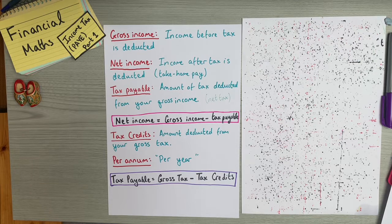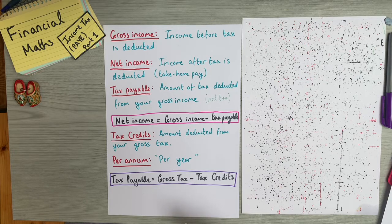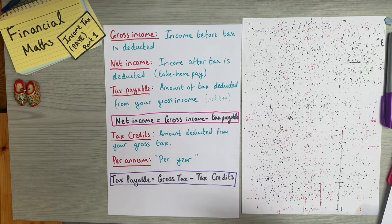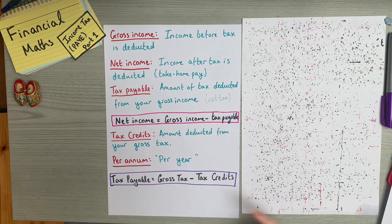One thing to note: when you see 'gross' in front of something — like gross income or gross tax — it means deductions haven't been made yet. When you see 'net' in front of something, it means deductions have been made. So net income means tax has been deducted, and net tax means your tax credits have been taken off your bill.